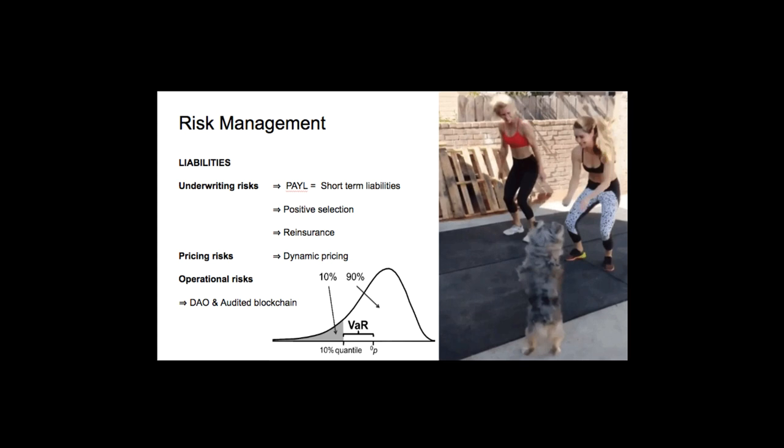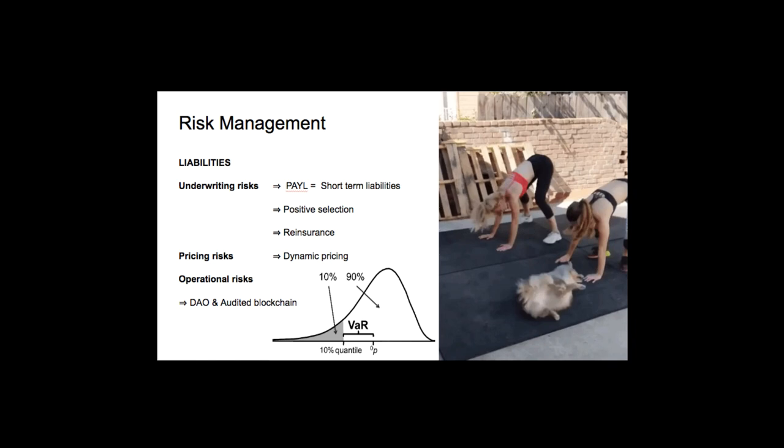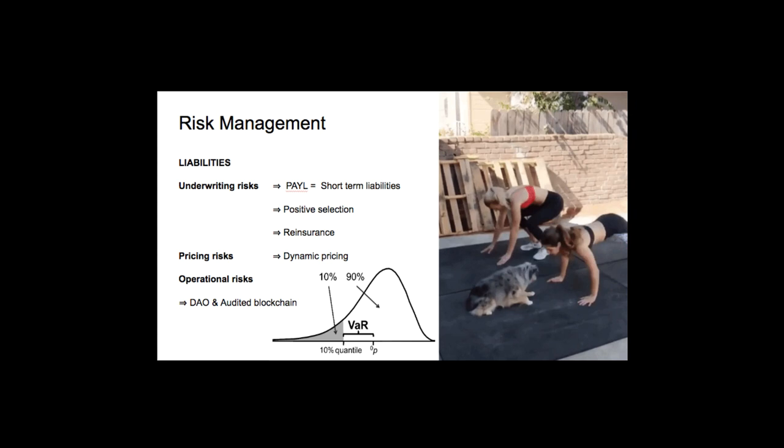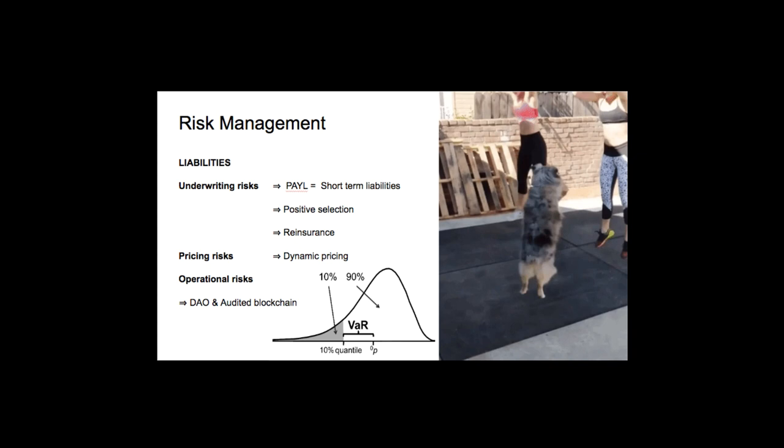Then, our customers benefit from discounts based on their weekly activities from IoT devices. Exercise increases your general level of health and life expectancy. We're therefore more relevant to the best customers. And in case a lot of our customers die anyways, a reinsurance contract will take over all the claims after a certain threshold.